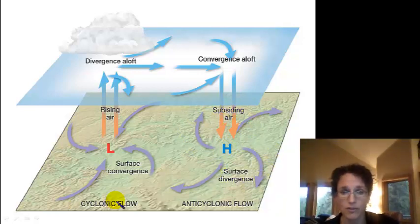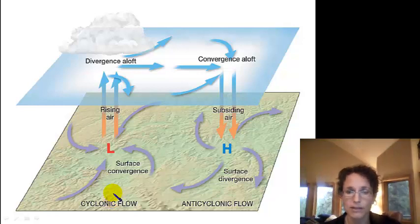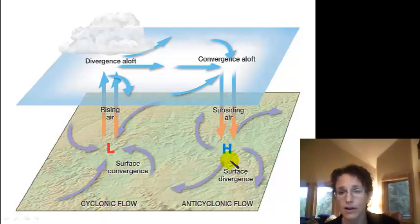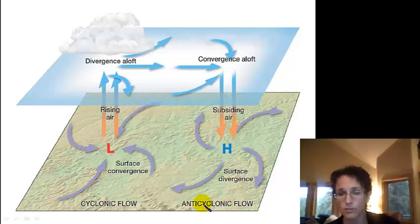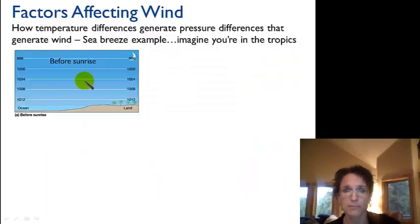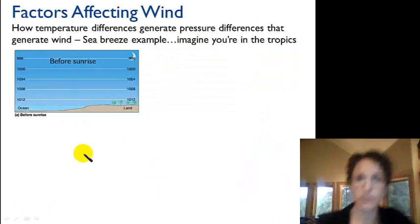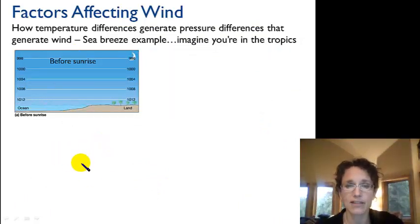That's in the northern hemisphere. If we were in the southern hemisphere, these rotational patterns would be opposite. Our low pressure counterclockwise flow in the northern hemisphere is what we call cyclonic flow. Our high pressure clockwise flow at the surface is what we call anti-cyclonic flow. Now let's look at some air pressure changes and how that affects winds and pressure patterns.